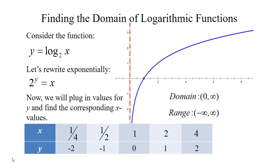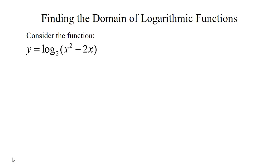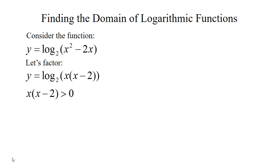So if you have log base 2 of x, the x can only be a value from 0 to infinity. If we replace x with any other expression, that expression has to be greater than 0. Here we replaced x with x squared minus 2x. Let's first factor x squared minus 2x — this becomes a product of x times x minus 2. That expression has to be greater than 0, and the key points are where x times x minus 2 equals 0, which is where x is 0 or 2.